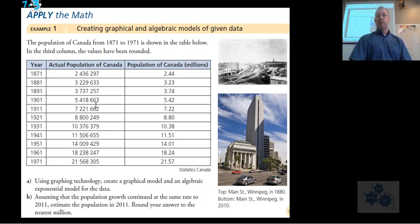It says using graphing technology, create a graphical model and an algebraic exponential model for the data. We're going to want to plot the points and draw the graph and figure out an exact function that would pass through those points. We've got three columns. How are we going to approach this? We could do two different graphs, but this is an exact number and this is rounded to the nearest million. We could probably just use one of these. If the answer just wants us to round to the nearest million, we could just use these numbers.